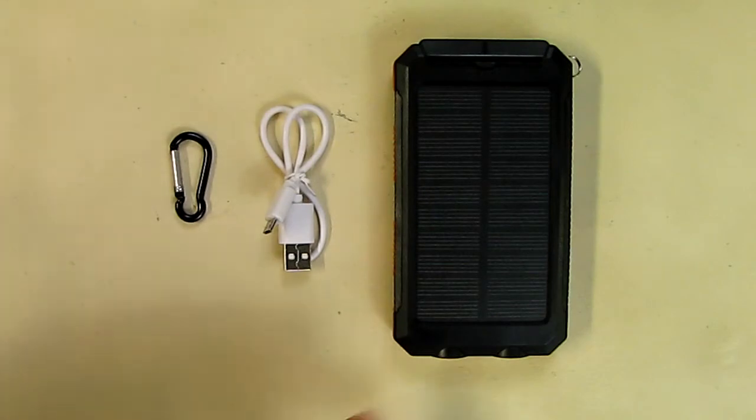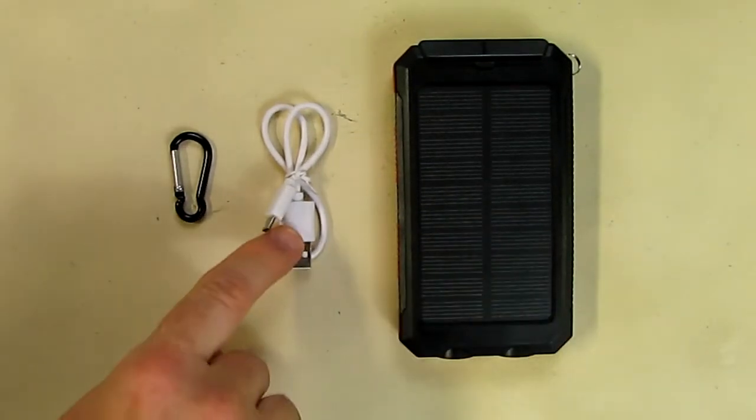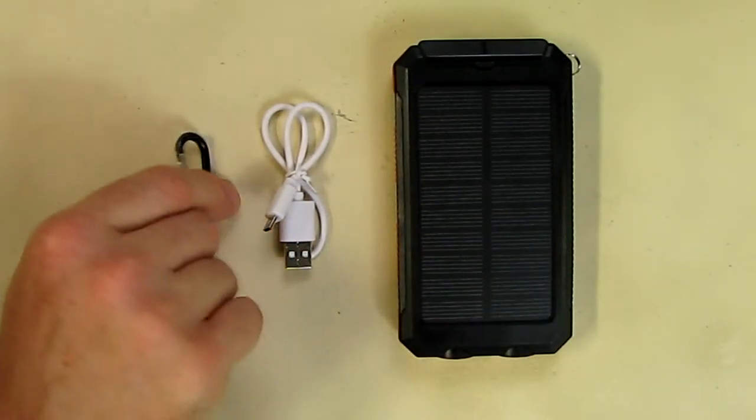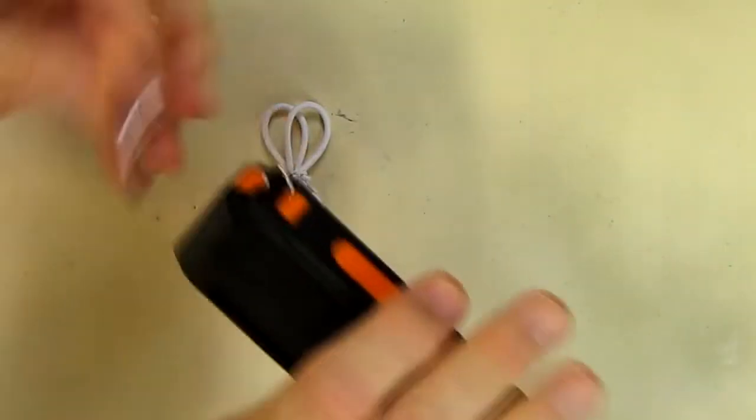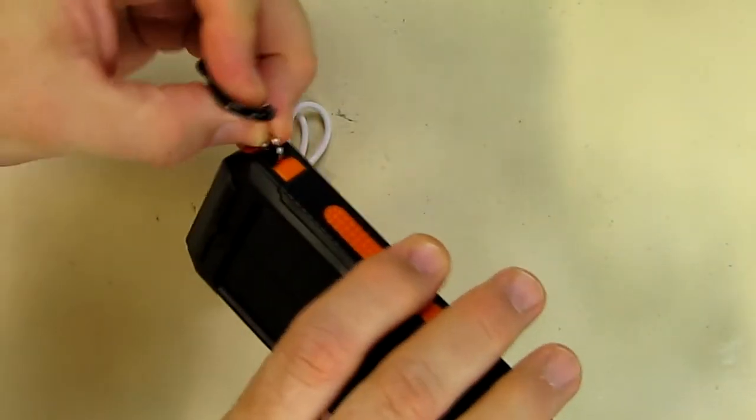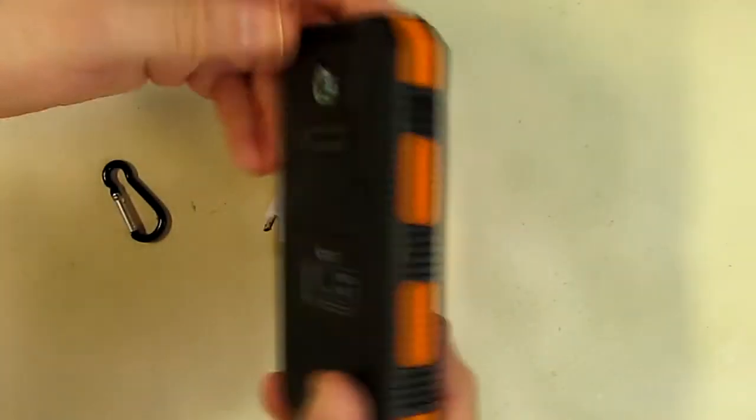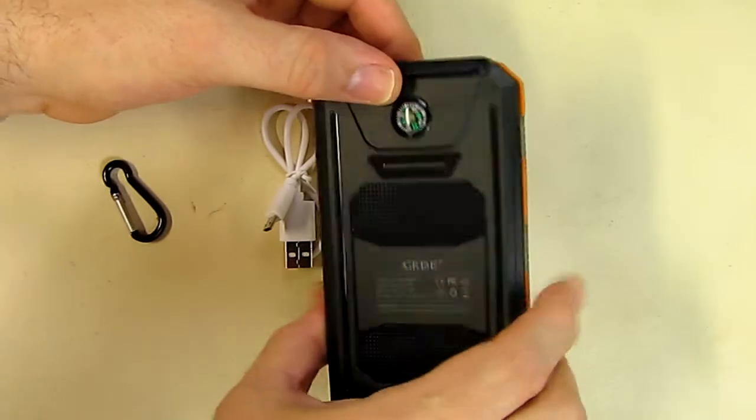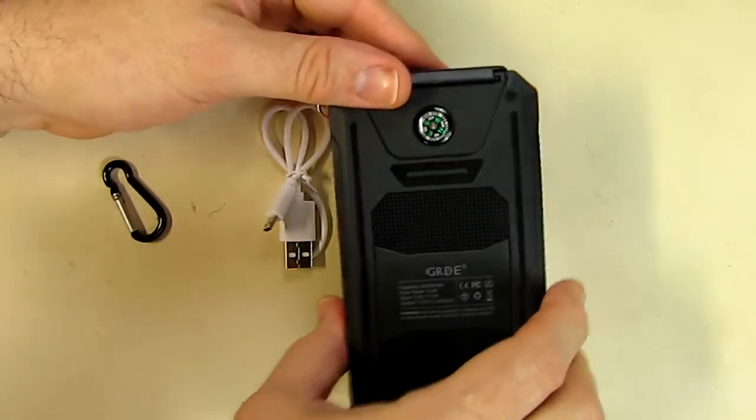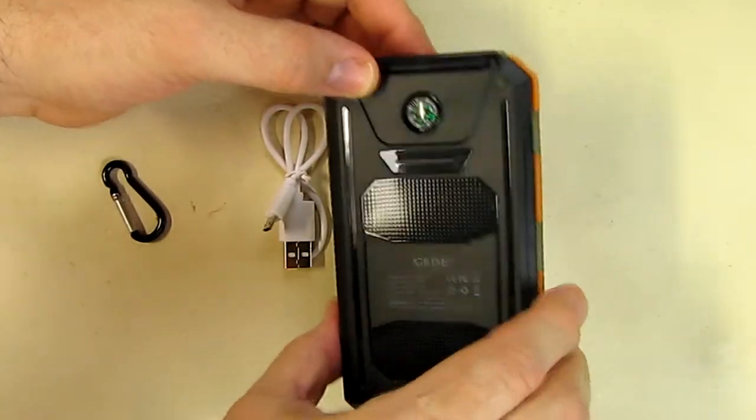Here's what the unit comes with: the unit itself, the USB charging cable, and one of these clip hooks that goes right on that little loop right there. First thing you notice is it has a little tiny compass built in with fluid in there to dampen it, and it seems to be pretty functional. I tested it.